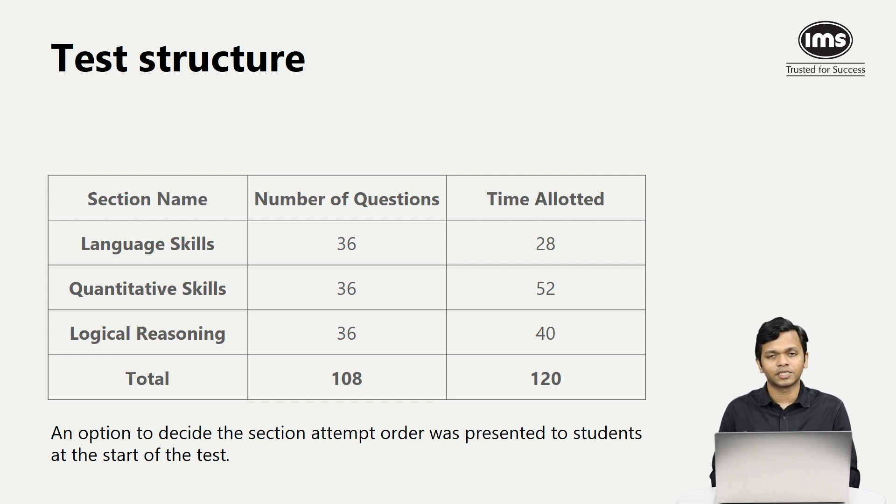An option to decide section attempt order was presented to students at the start of the test. You can decide in which order you want to attempt, whether you want to do language first, then quant and then LR, or follow some other order, like quant, language, LR. You have three minutes to decide in which order you want to take the test.